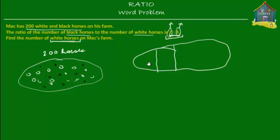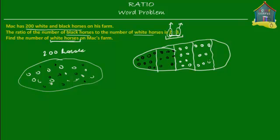So if we take all the black horses and put them into 2 sets of the same size, this is important — all these sets will be of the same size, meaning the same number of horses in each set. If we can put all the black horses into 2 sets, then we will be able to put all the white horses into 3 sets, and each of these sets should be of the same size.